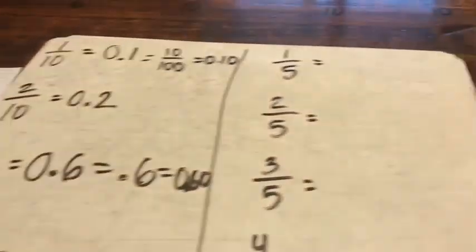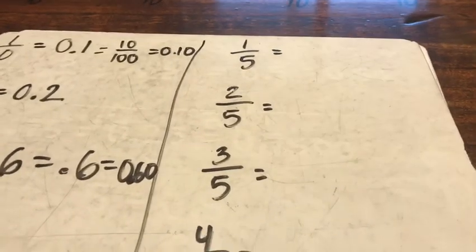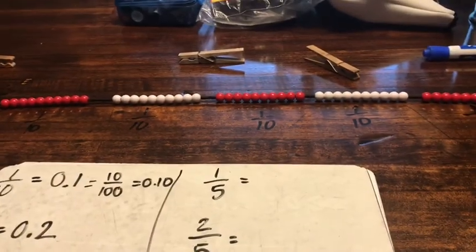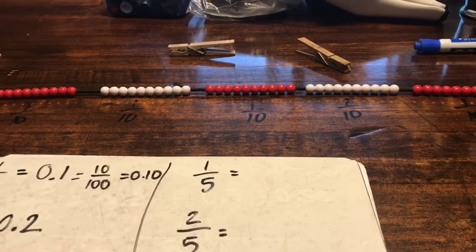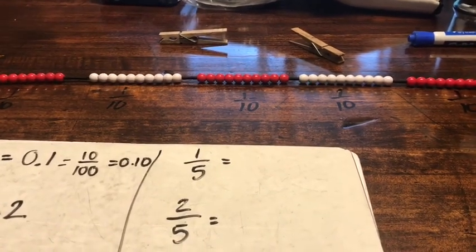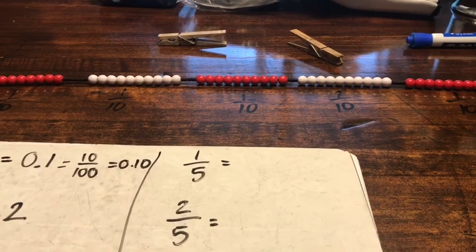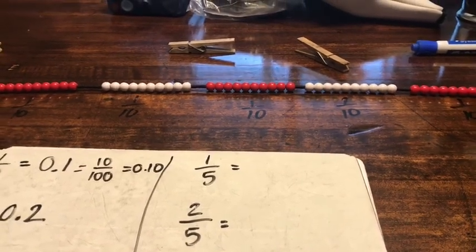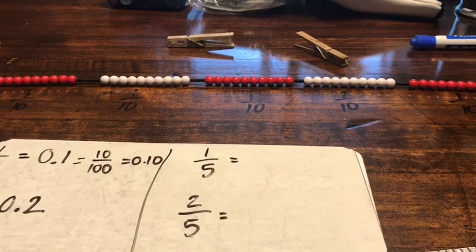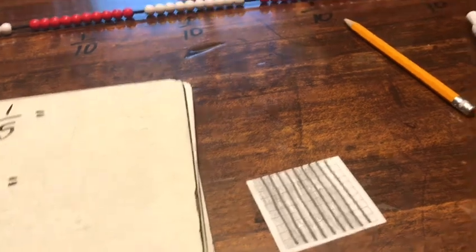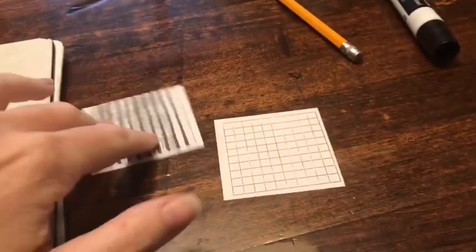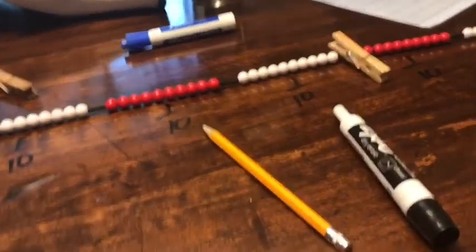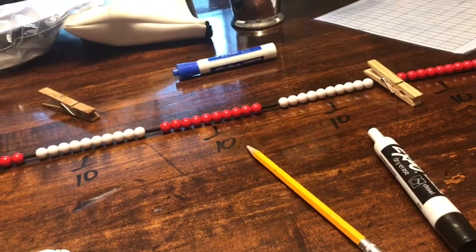Now we're going to use what we know about tenths to help us with fifths. Fifths are very challenging. Tenths means ten equal parts make the whole — so fifths would be five equal parts. I would let students work with the hundredths grid and try to break it into five equal parts. They have a hard time with it, but that struggle is a good struggle. They can also use the beaded number line to find five equal parts through exploration.